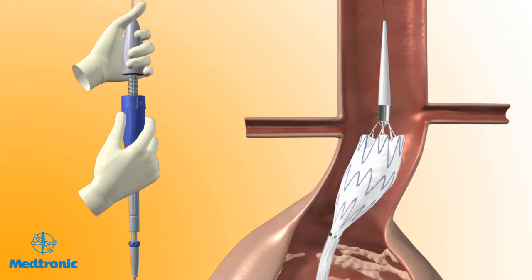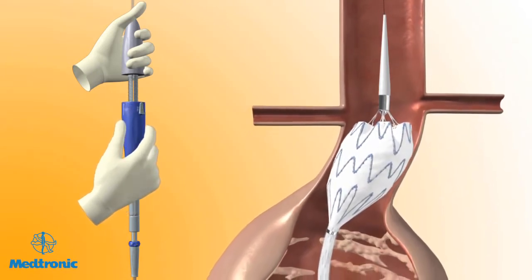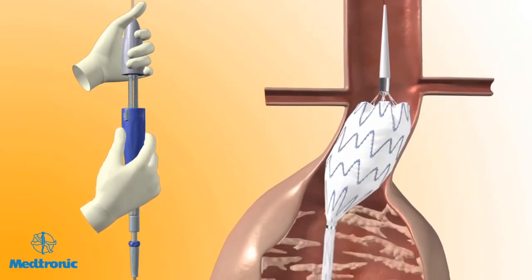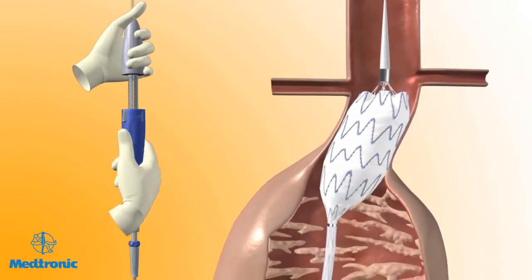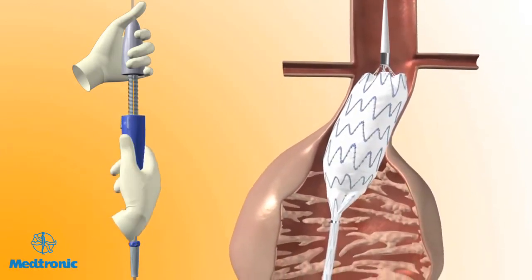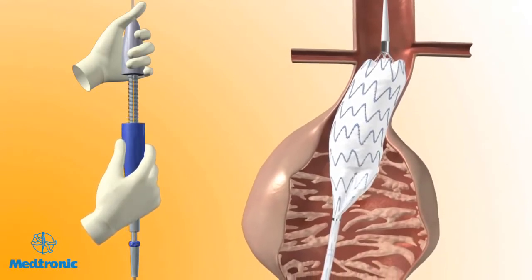While continuing to hold the delivery system stationary, slowly rotate the slider counterclockwise until the graft cover is withdrawn to the point that the contralateral stub leg is released from the delivery sheath.